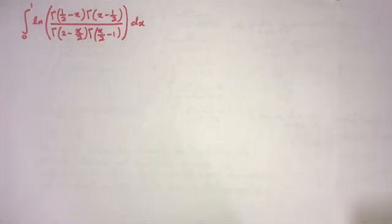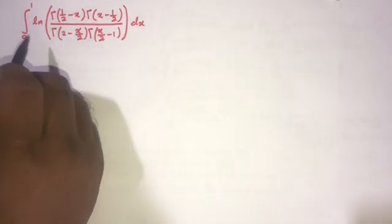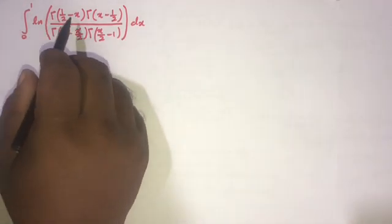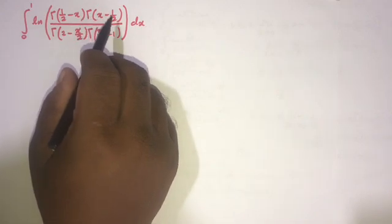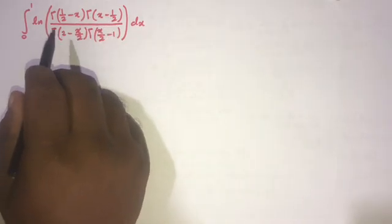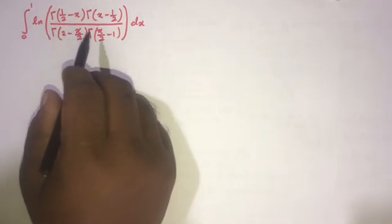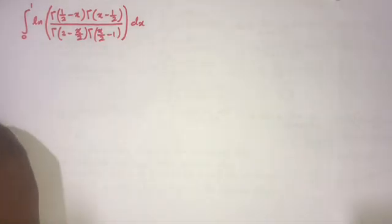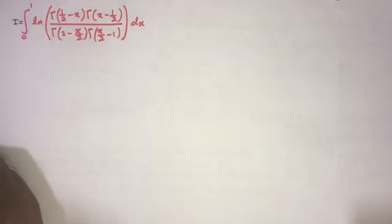Welcome to the Mathematics and My Channel. Today we are going to solve another interesting integral. This question is from Muhat Jamu from Nigeria. The question is the integral from 0 to 1 of the natural log of gamma(1/2 - x) times gamma(x - 1/2) over gamma(2 - x)/2 times gamma(x/2 - 1). First, I am going to take this integral equal to I.